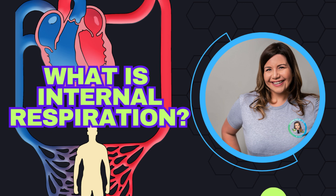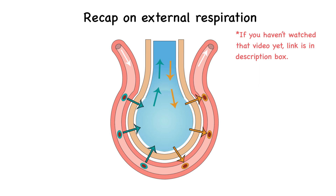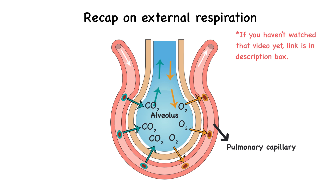In my last video on gas exchange in the lungs, you learned about what external respiration is. To recap, external respiration, also known as pulmonary gas exchange, is the diffusion of oxygen from the air in the alveoli of the lungs to the blood in the pulmonary capillaries. It also includes the diffusion of carbon dioxide in the opposite direction. Simply stated, this is the gas exchange that occurs in the lungs between the air you breathe in and the blood.